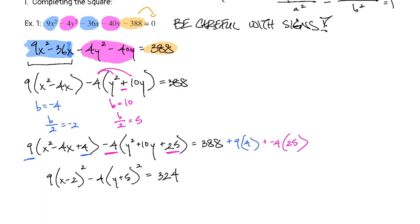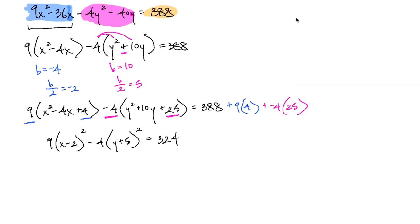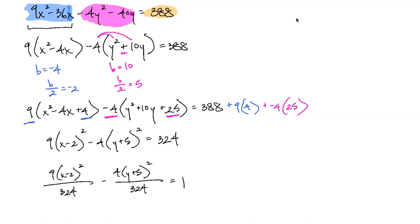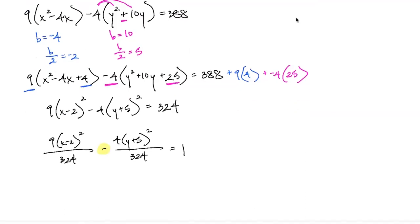Sometimes these numbers are a little bigger — don't panic. The last thing to do is divide both sides by 324. Remember, my number one clue that this is not an ellipse is that minus sign. To reduce the fractions, take 324 ÷ 9 — try that on your calculator.